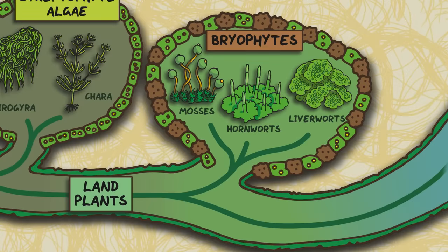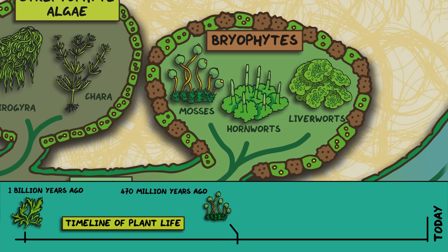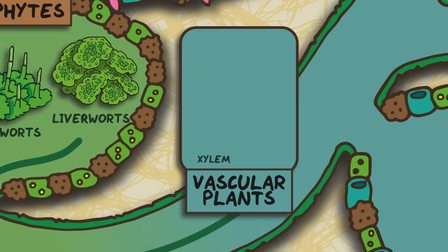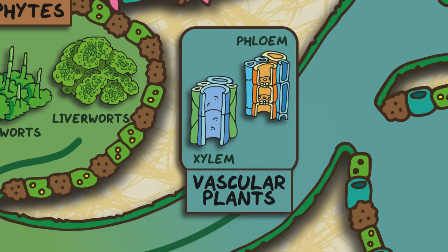Every plant we'll meet after this point has got a vascular structure. Based on the fossils we've discovered, they first appeared around 420 million years ago. A vascular plant has specialised tissues called xylem and phloem which transport water and nutrients throughout its structures. These tissues are rigid and enable vascular plants to grow taller and more complex than the non-vascular plants we've seen so far.